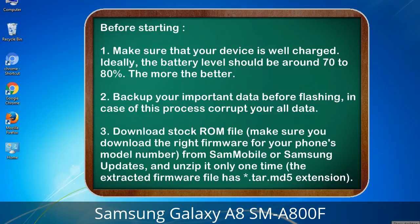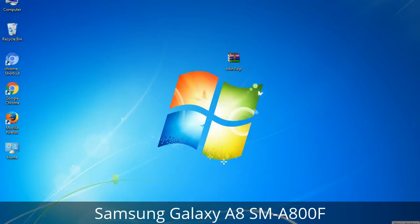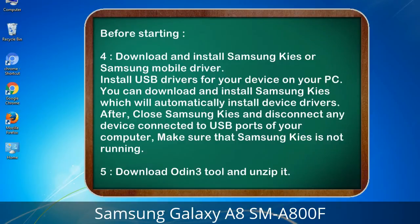Download firmware from Sammobile or Samsung Updates, and unzip it only one time. The extracted firmware file has a *.tar.md5 extension. 4. Download and install Samsung KIES or Samsung mobile driver. Install USB drivers for your device on your PC. You can download Samsung KIES which will automatically install device drivers. After, close Samsung KIES and disconnect any device from your USB ports, making sure Samsung KIES is not running. 5. Download the Odin3 tool and unzip it.